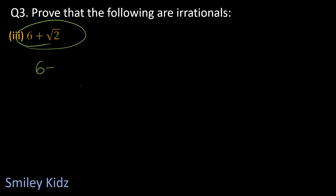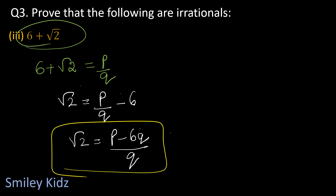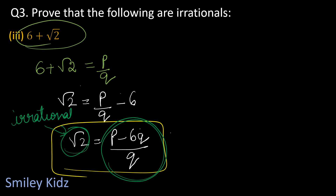Next: 6 plus root 2. Assuming to the contrary that 6 plus root 2 is rational, we equate it to p upon q. Sending 6 to the other side gives root 2 equals p by q minus 6, which on taking the LCM becomes root 2 equals (p minus 6q) upon q. The RHS, where p and q are integers, is a rational number. But on the LHS, root 2 is irrational.